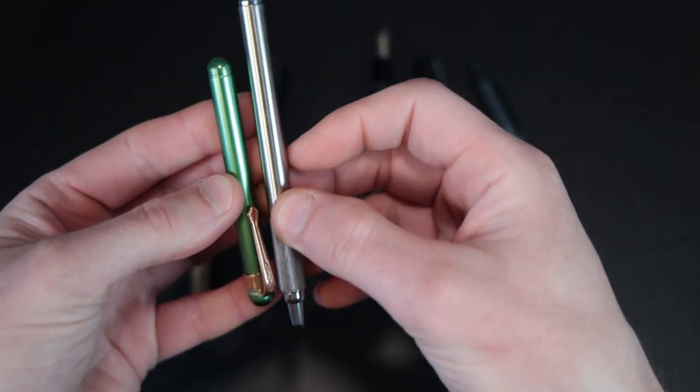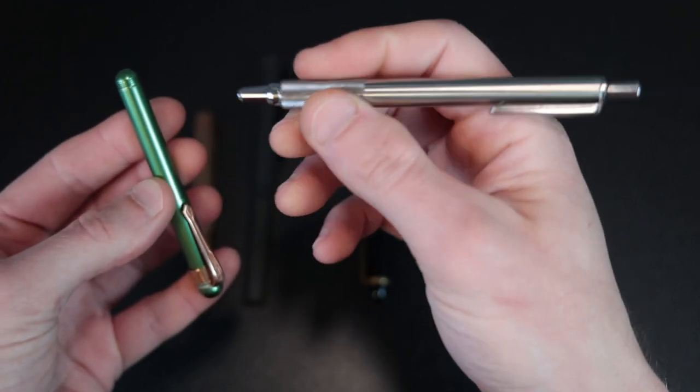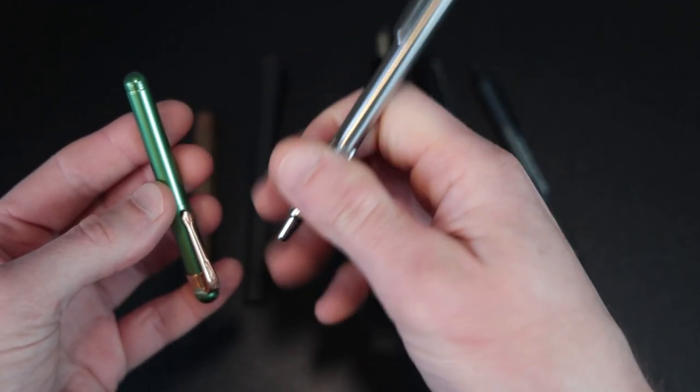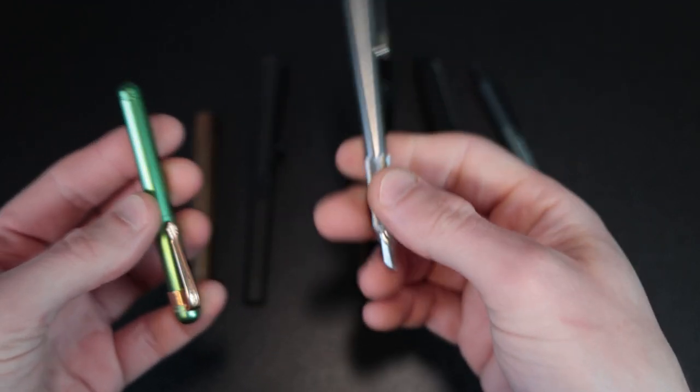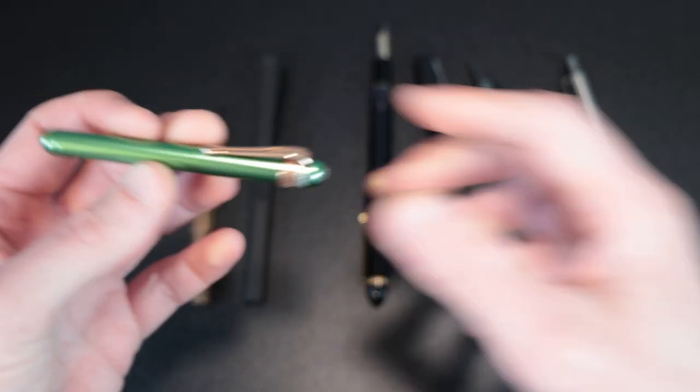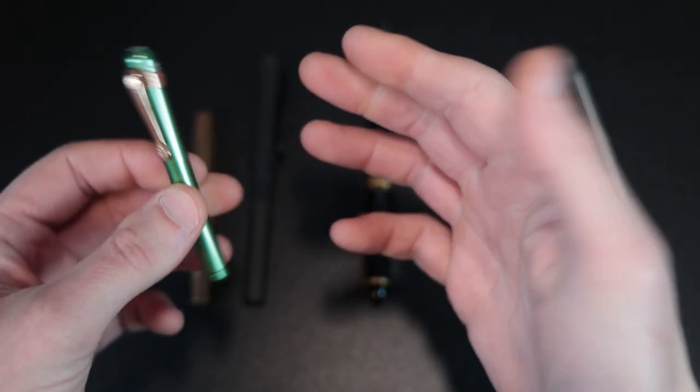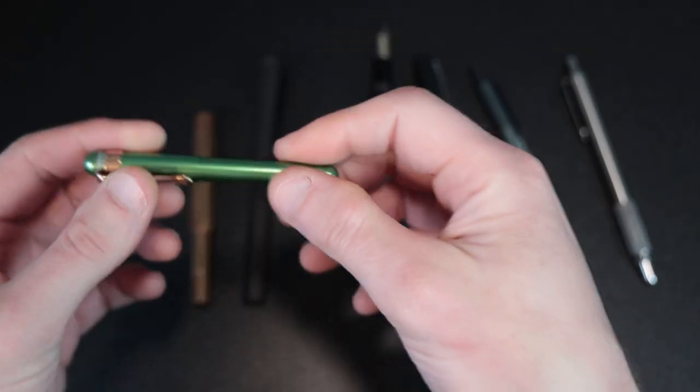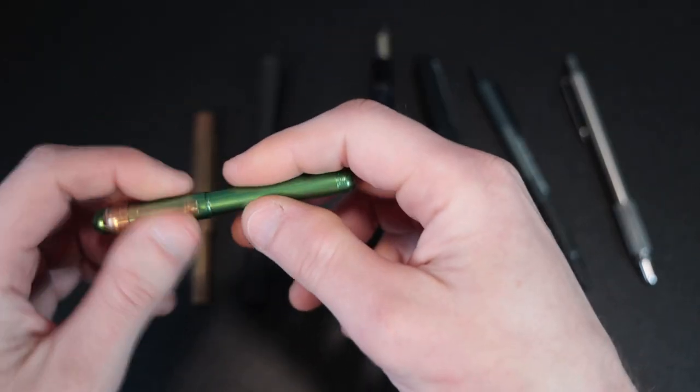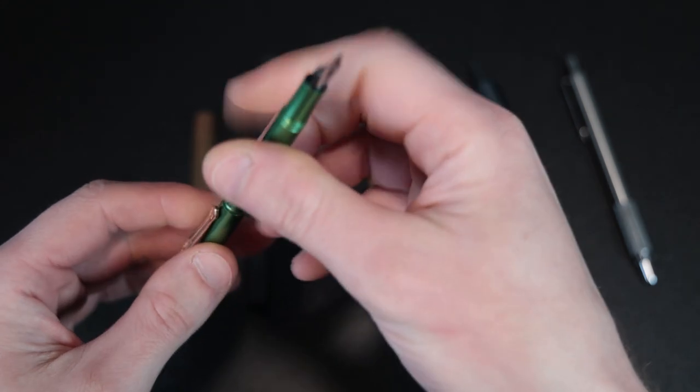The Zebra does have a larger knurled grip on it though. So I use pens of this size and it's fine. This one works. It does work for me. And obviously, if you have smaller hands than me, it would work even better, but it is just absolutely tiny.